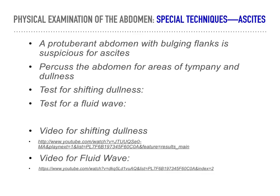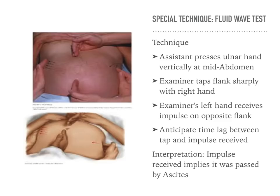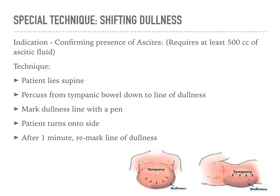When evaluating for ascites, we will review some techniques you may be learning in your health assessment course, particularly looking at shifting dullness and fluid wave. I will post YouTube links within the module so you can watch these videos. The fluid wave test: for a positive result, you'll have an impulse that transmits through the abdomen, which is positive for ascites. The shifting dullness technique can also confirm the presence of ascites.